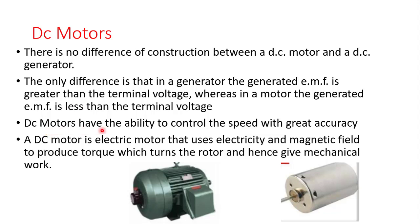DC motors have the ability to control speed with greater accuracy. When you look at the various types of motors, DC motors have the ability to control speed at greater accuracy. Most of the robots you see around are all DC motors being used to control the movement and actions of the robots because of the accuracy in speed control.